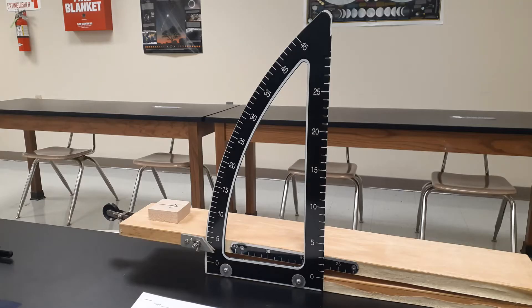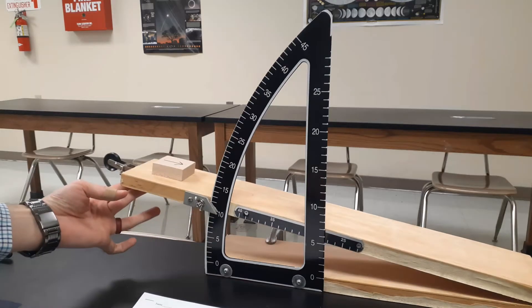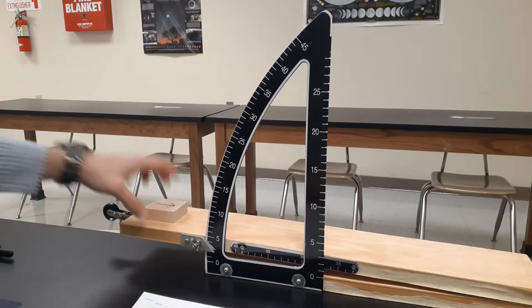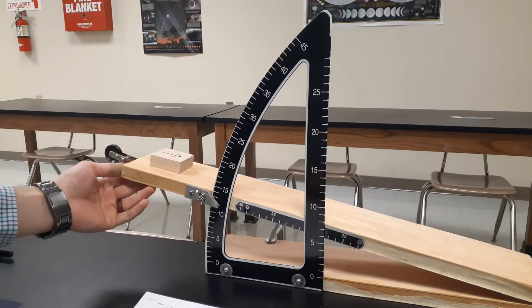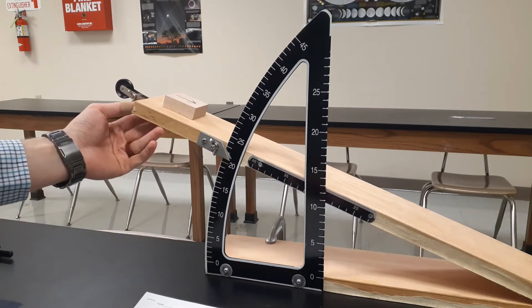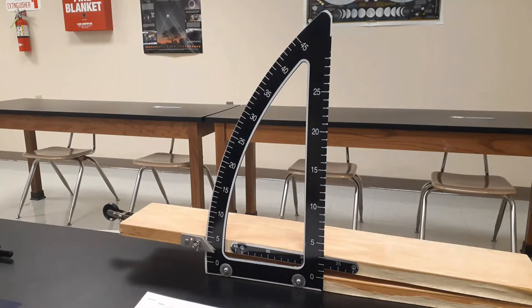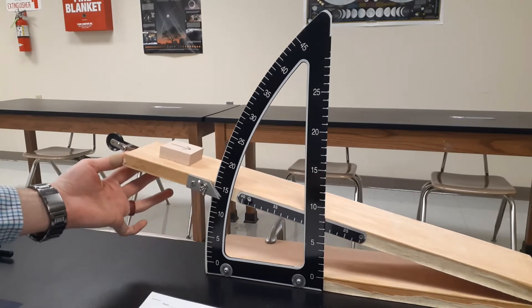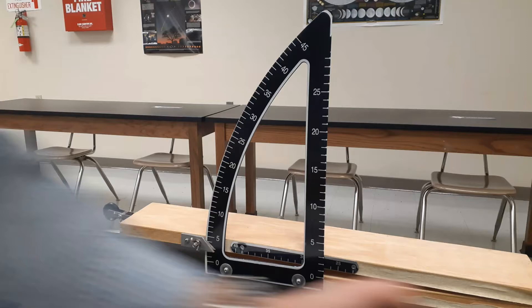Now I'm just on to the plain old wooden surface here by itself. As I start raising my ramp, 16 degrees. Got first movement at 16 degrees. I'm going to reset it. Try it for a second time. 22 and a half degrees. And then one more test here for the wooden surface. 18 degrees.